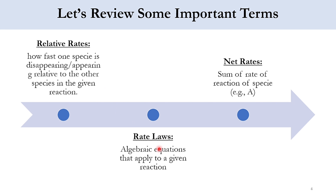The rate law is an algebraic equation that applies to a given reaction, and the net rate is the sum of the rates of reaction. For reactants, the rate is designated as minus R_A and minus R_B. For products, it is R_C and R_D — negative R for reactants and positive R for products.